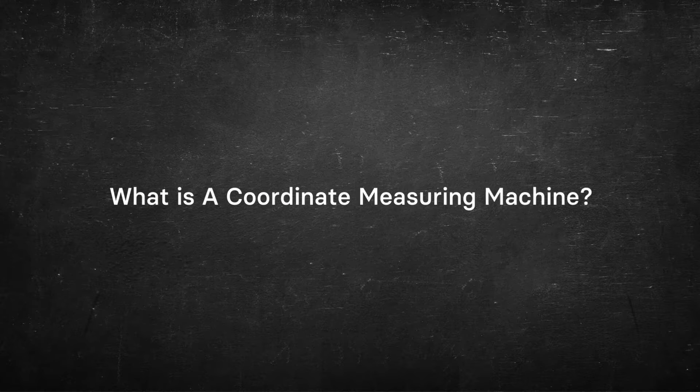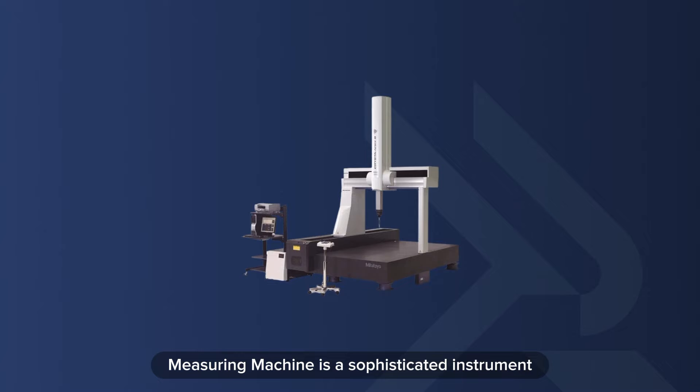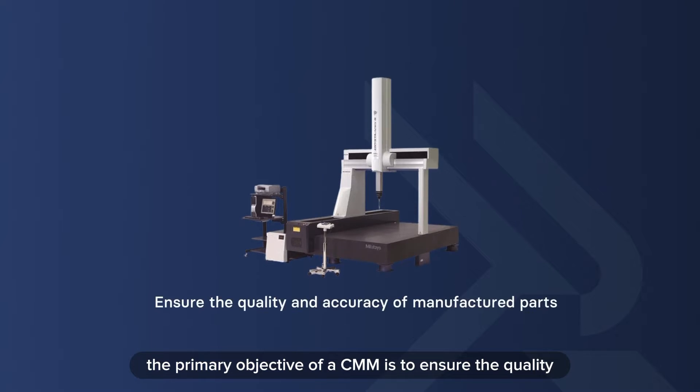What is a coordinate measuring machine? A coordinate measuring machine is a sophisticated instrument used to precisely determine the dimensions and geometrical characteristics of various components. The primary objective of a CMM is to ensure the quality and accuracy of manufactured parts.